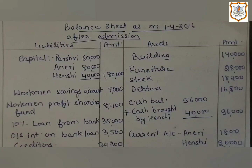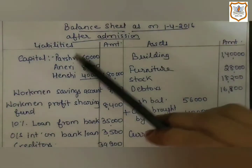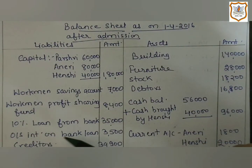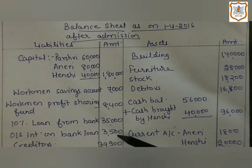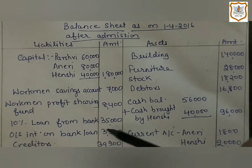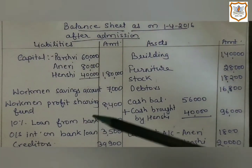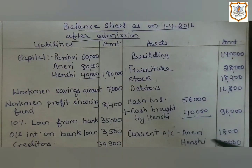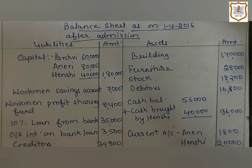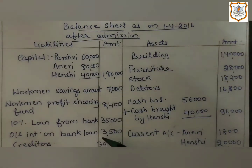As outstanding interest on bank loan is a liability, we will record it on the liability side of the balance sheet — outstanding interest on bank loan: 3,500. We get 3,500 because the bank loan amount in the old balance sheet is 35,000, and the interest rate is 10%, so 10% of 35,000 equals 3,500.